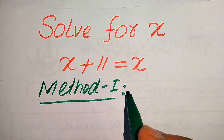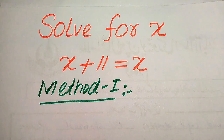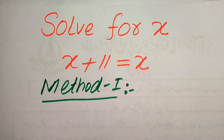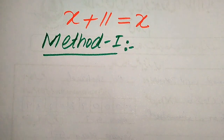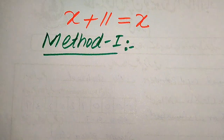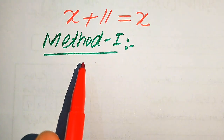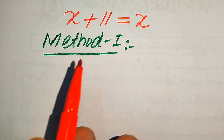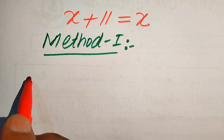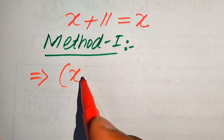In the first method, our first target is to find the value of x. You can see directly that we cannot find the value of x just by inspection, but I can give you a nice technique to easily get the value of x. This is a very important question — how to find the value of x from here.